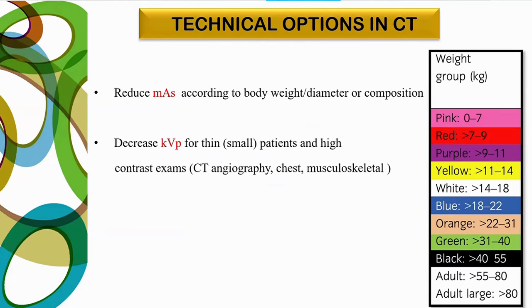For CT technical options with pediatric patients: first, reduce mAs according to body weight, diameter, and composition of the patient — this will greatly reduce dose through a tailored protocol. Also decrease kVp for thin, small patients in high-contrast examinations like CT angiography and musculoskeletal imaging.